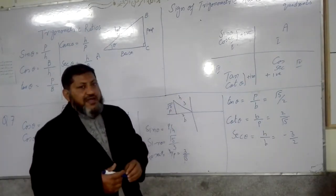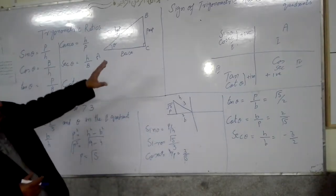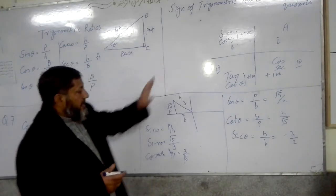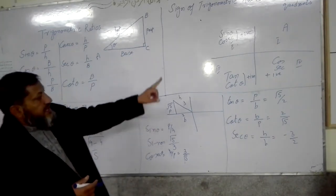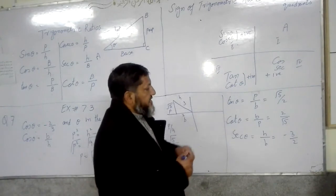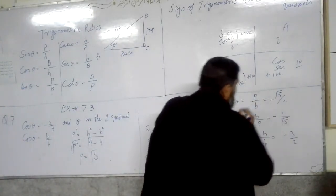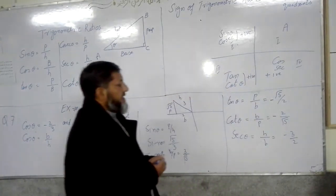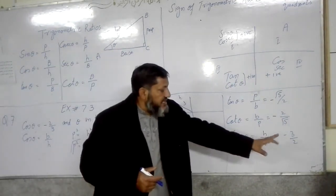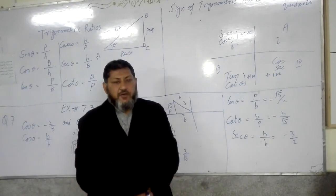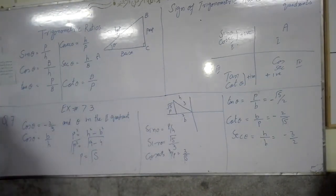We have found all the values. Since we are in the second quadrant: sine is positive so sin θ = +√5/3 remains positive. Tangent and cotangent are negative in the second quadrant, so we assign a negative sign to tan θ and cot θ. Similarly, secant theta is also negative in the second quadrant, so sec θ = −3/2. Thank you very much.